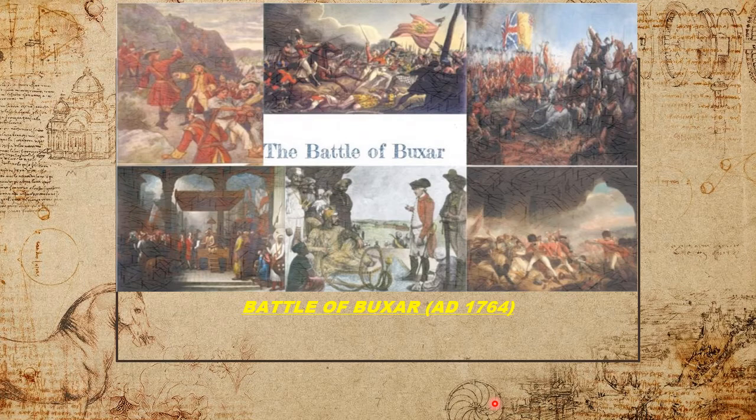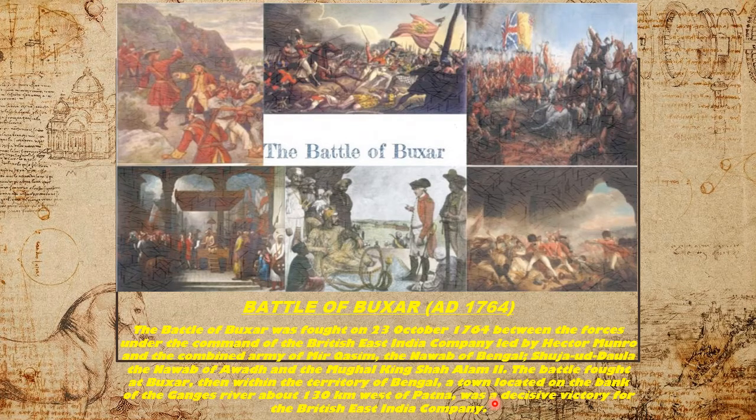Mir Zafar was reinstated on the throne, but Mir Qasim was determined to recover his throne. He escaped to Awadh, where he formed an alliance with Shuja ud-Daula, the Nawab of Awadh, and the Mughal Emperor Shah Alam II. The combined forces of the three allies clashed with the Company troops at Buxar in 1764 and were decisively defeated by the British.